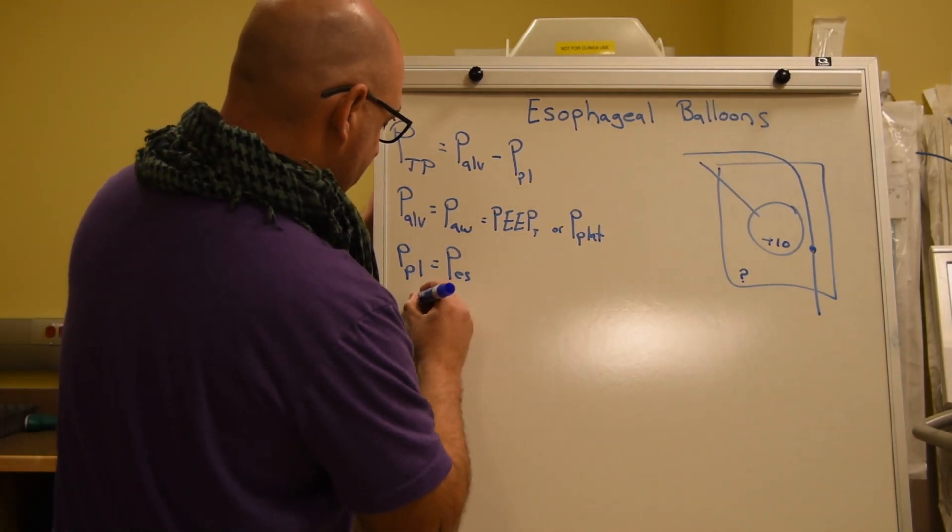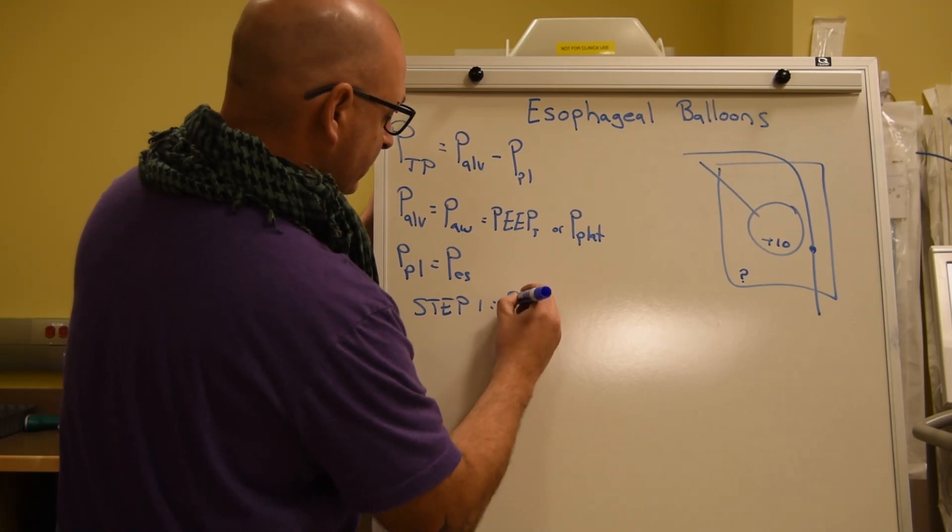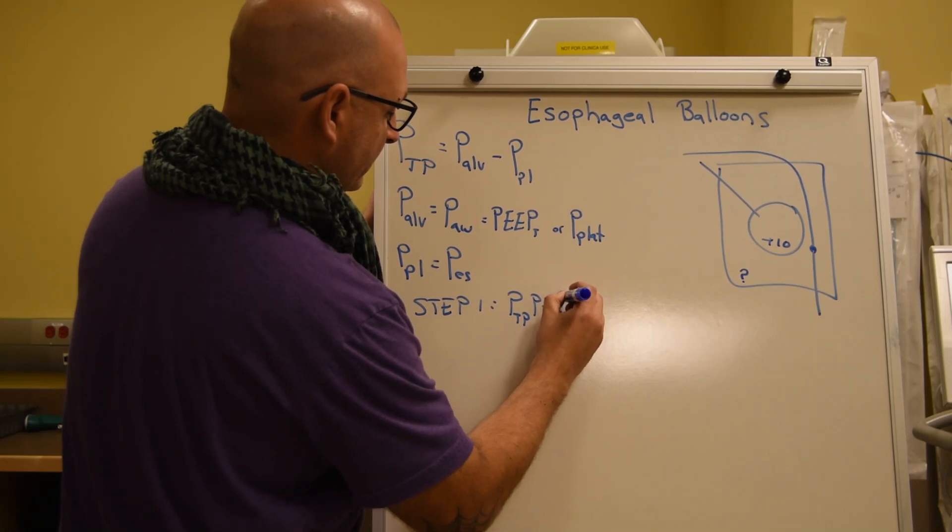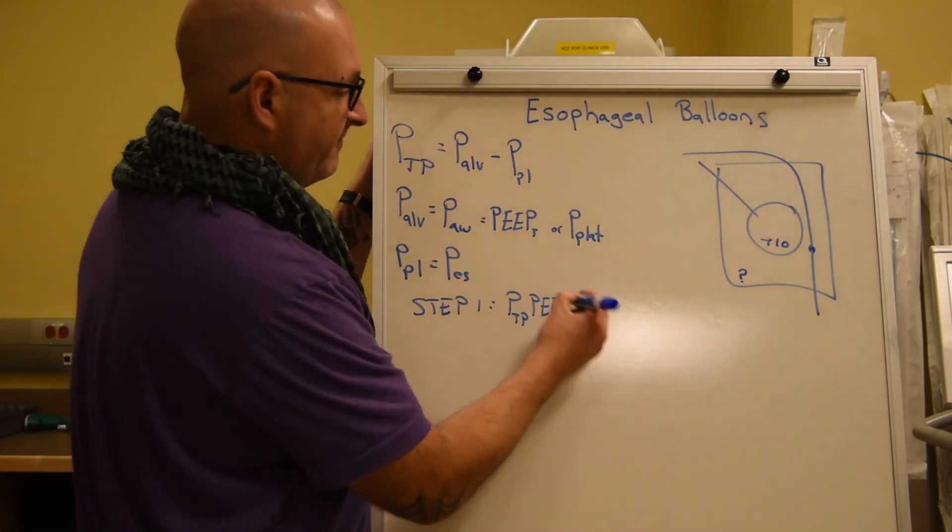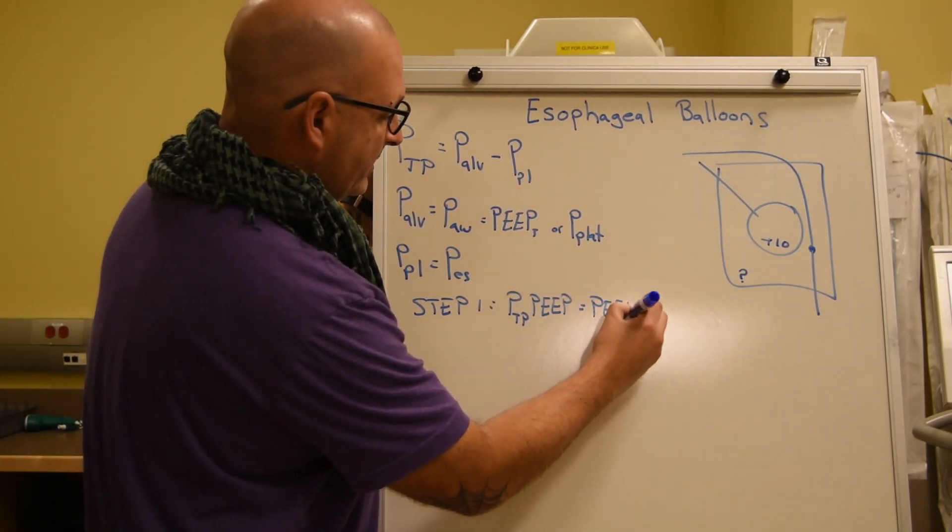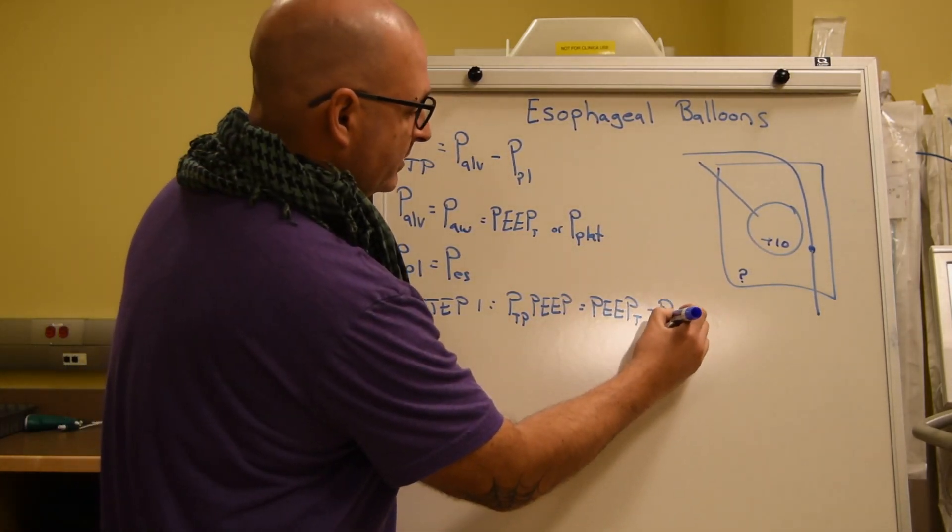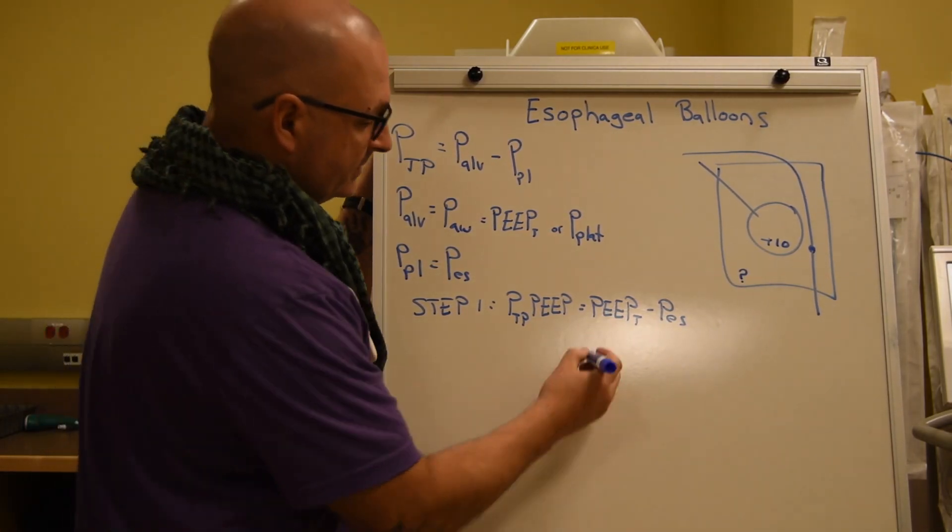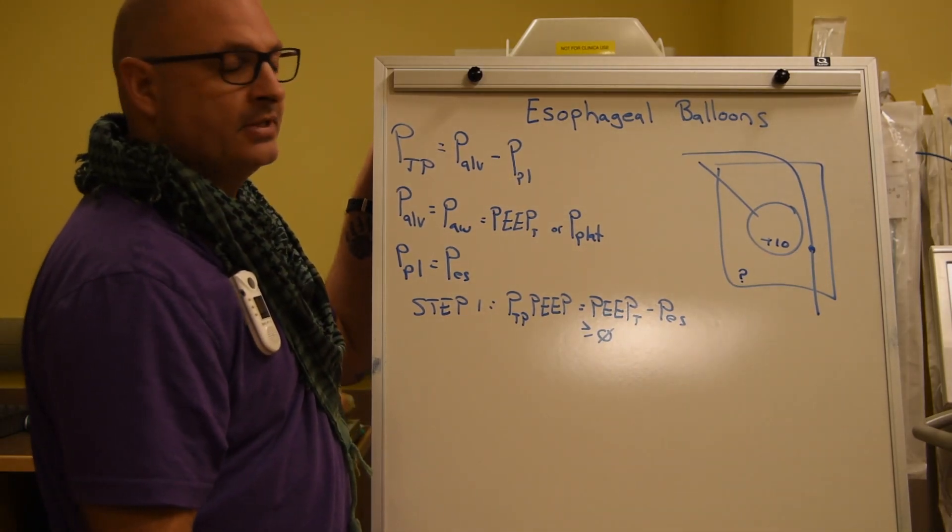Step one is our transpulmonary PEEP. Filling in our surrogates, we can identify by finding out our total PEEP minus our esophageal pressure. And what is our target? The target we want is a value greater than or equal to zero.